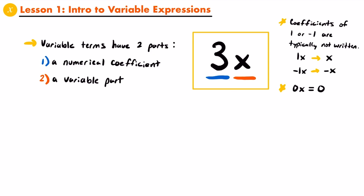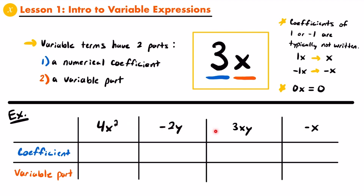Now that you are familiar with the two different parts of a variable term, let's identify the different parts of the variable terms from our variable expression. These were the four variable terms: 4x squared, negative 2y, 3xy, and negative x. Starting with 4x squared, the coefficient is the number in front of any variables — in this case, that would be 4. And the variable part in this case would be x squared, since it's the part of the variable term that involves a variable.